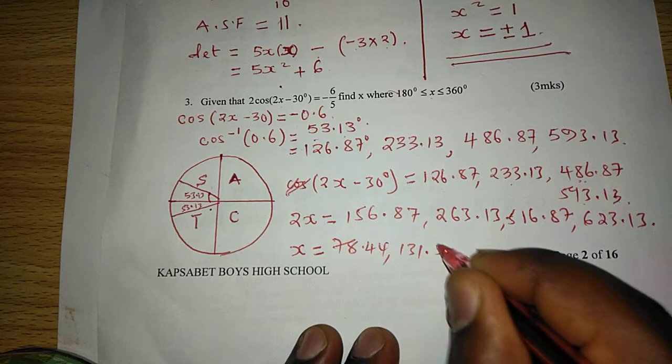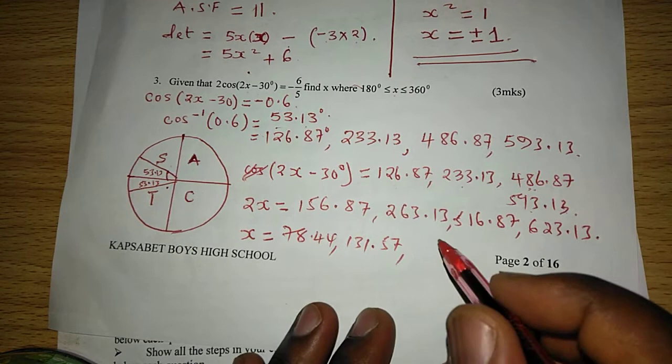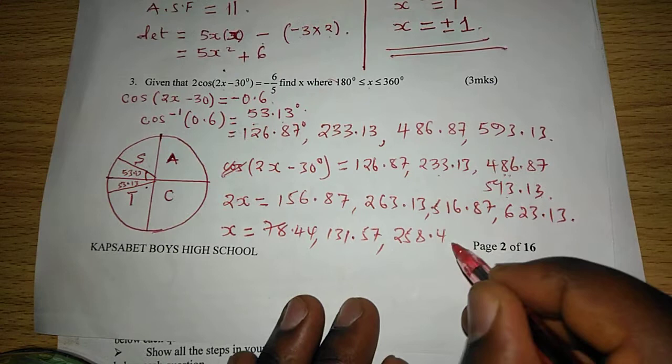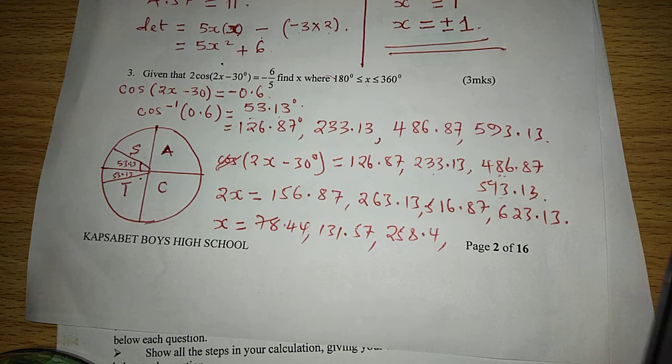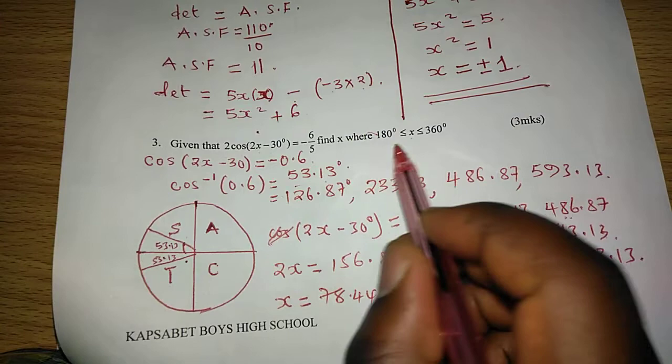The next one will be 516.87 divided by 2, this will be 258.4, and finally 623.13 divided by 2 becomes 311.57.